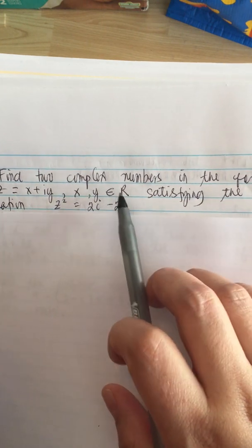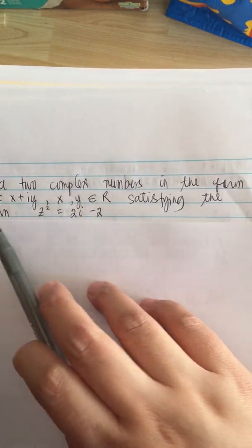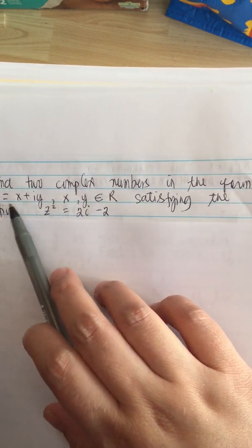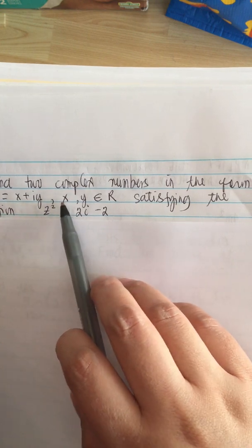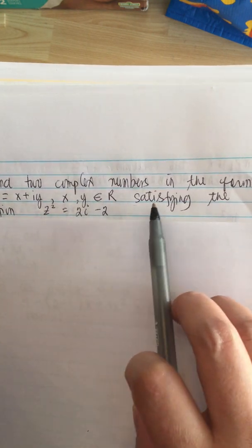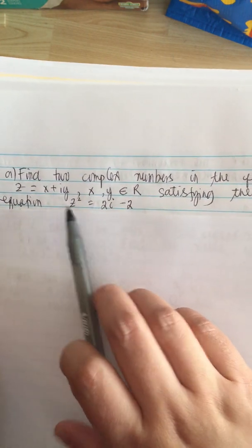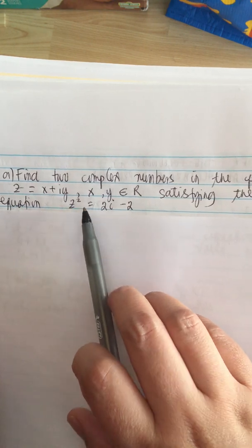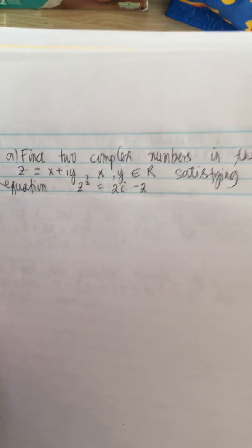Find the complex numbers in the form z = x + iy, where x and y are real numbers. That is, find z satisfying z² = 2i - 2.